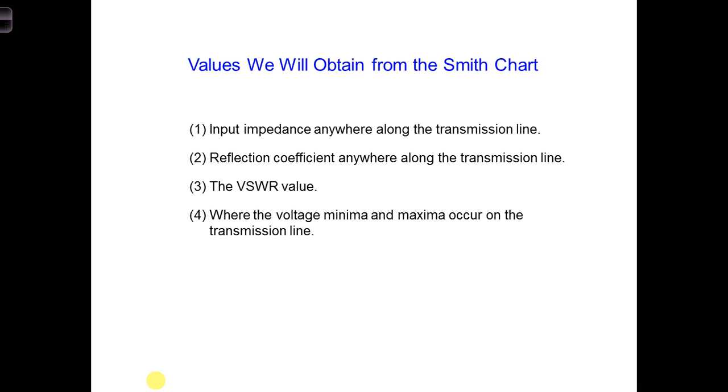There are a few more things we can learn about the Smith chart. After that we will see if we can use a Smith chart to help us match the new sensor antenna to the 70 ohm transmission line we want to install on the Millennium Falcon.